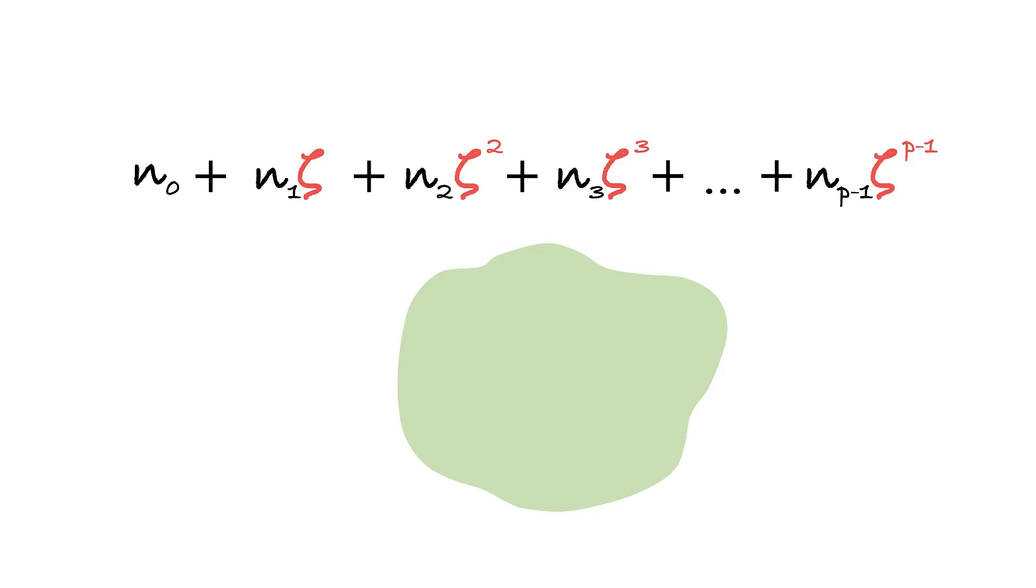It's very easy to see that numbers of this form constitute our new ring, because a sum or a product of any two numbers of this form yields a number of the same form. We will denote this ring as Z[zeta], an extension of the ring of integers with the root of unity zeta. This new ring has a lot of properties similar to Z itself. For instance, it has the same notion of divisibility. We say that number a from Z[zeta] divides b from Z[zeta] if there exists another number c from Z[zeta] such that b equals a by c, just like with good old integers in Z.